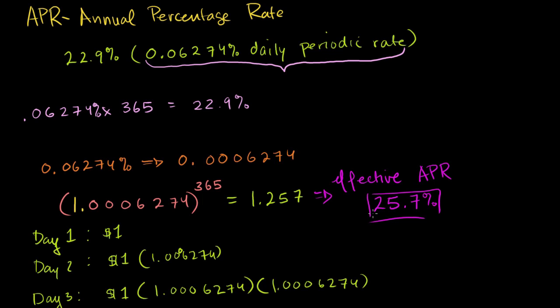I encourage you not to keep balances, but if you do, pay close attention: that 22.9% APR is probably not the full effective interest rate, which might be closer to 26% in this example. And that's before penalties and other fees.